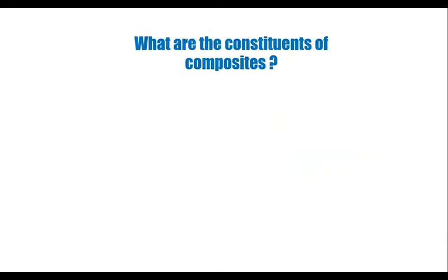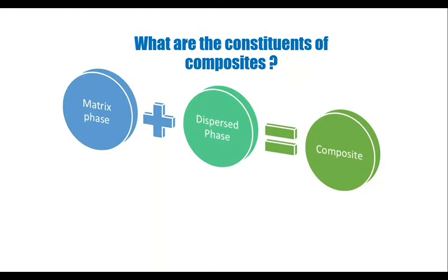What are the constituents of composites? The composites mainly consist of two constituents: body constituent and structural constituent. Body constituent encloses the composite material and gives it its bulk form, and continuous matrix phase is a body constituent. Structural constituent gives the internal structure of the composite material, and the dispersal phase is a structural constituent. So we can say composite is made by matrix phase and dispersal phases.